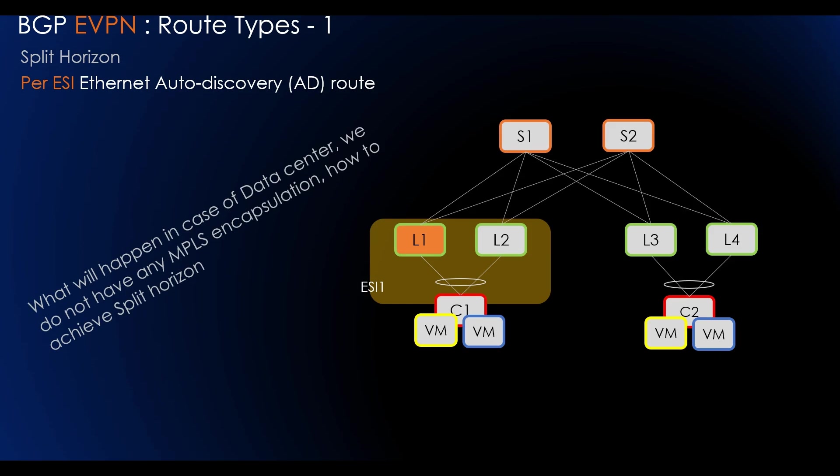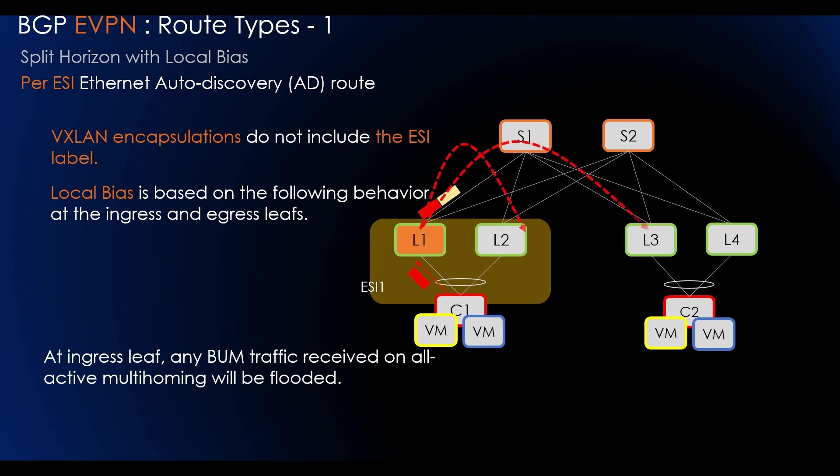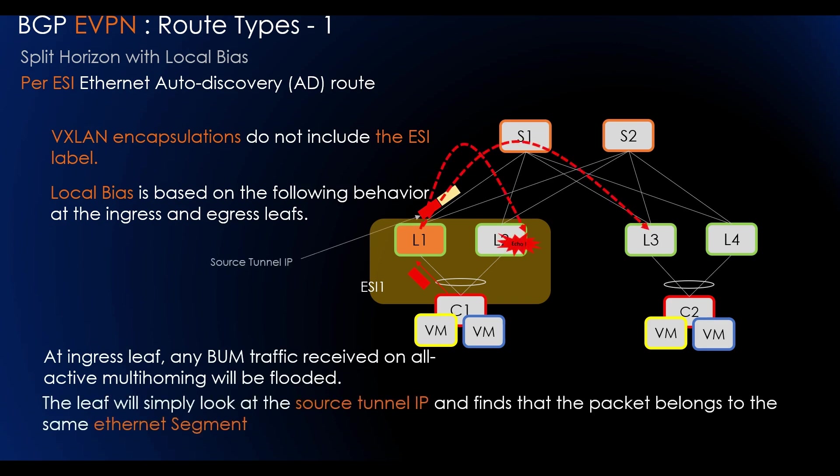So how will we be able to do loop avoidance in this case? The answer is whenever we are using VXLAN in a data center environment, we have local bias, which is based on the following behavior at the ingress and egress leaf. At the ingress leaf, any BUM traffic which has been received on all-active multi-homing will be flooded to all local sub-interfaces irrespective of the DF or non-DF status. When BUM traffic is received from another leaf in the same segment, the leaf will simply look at the source tunnel IP and find the packet belongs to the same Ethernet segment. And based on that, it will block the traffic.